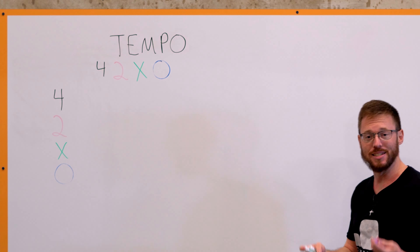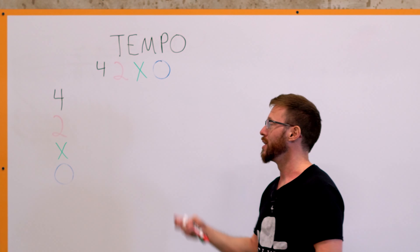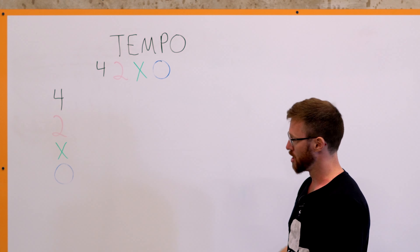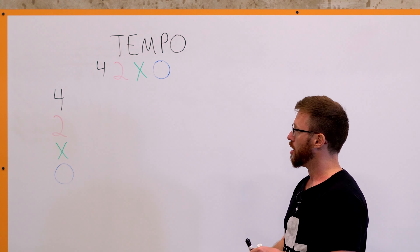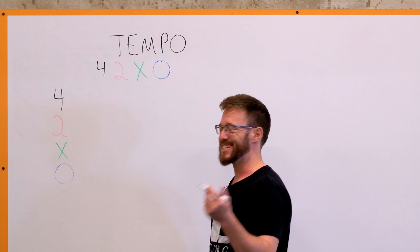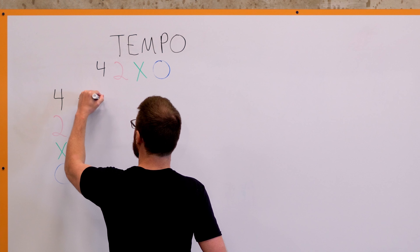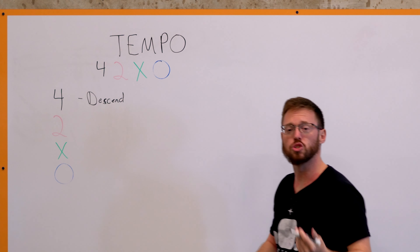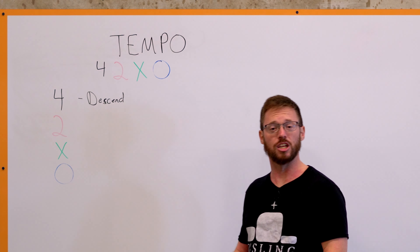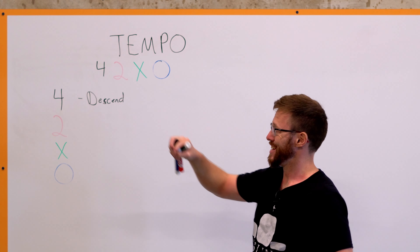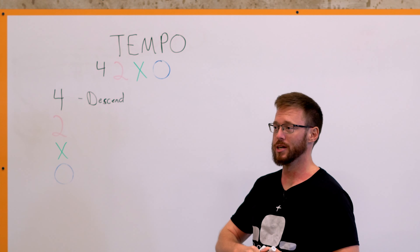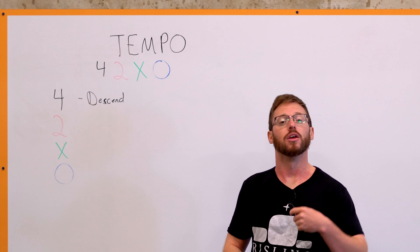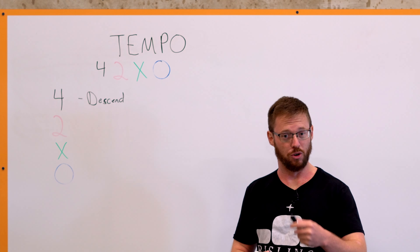We need to understand what each digit actually represents. The first number is going to be how long it takes you to descend in a rep — to descend. So if you're doing a squat, bench press, or chin-up, this is how long it takes you to go from the top of the rep down. If you're doing a squat with a 4 as the first digit, that's 4 full seconds before you get to the bottom of the rep.